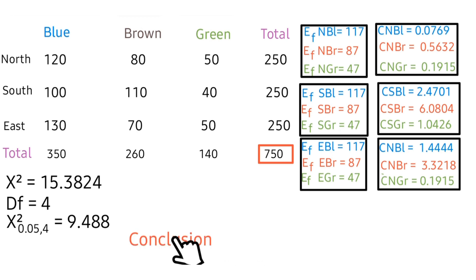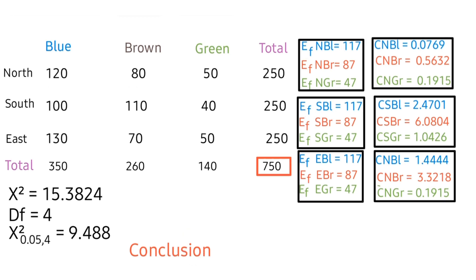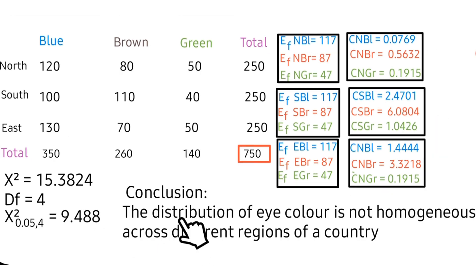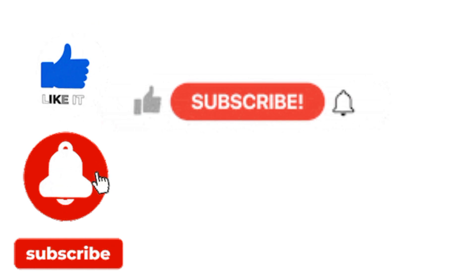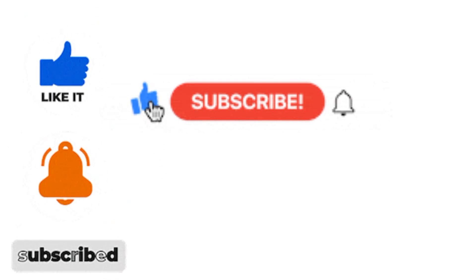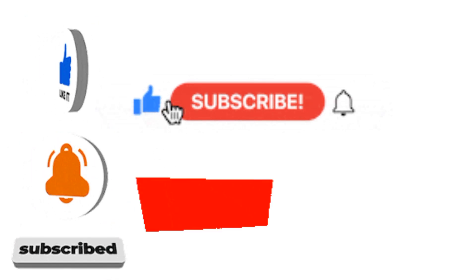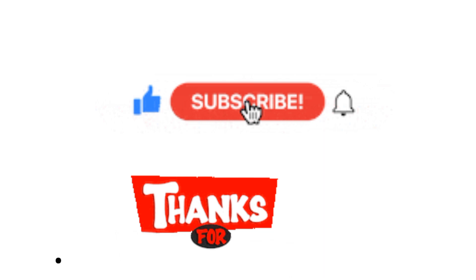Finally, our conclusion is based on what the alternative hypothesis states: the distribution of eye color is not homogeneous across different regions of our country. I hope this video helps. Please like this video, leave an amazing comment, share this video, and subscribe to my channel. Thanks so much for watching — bye!